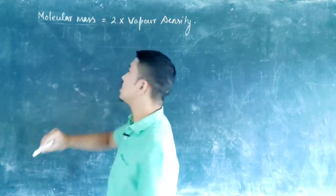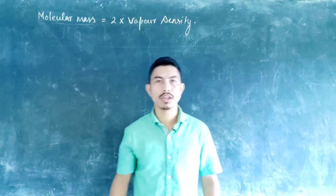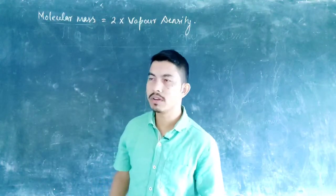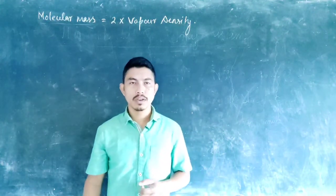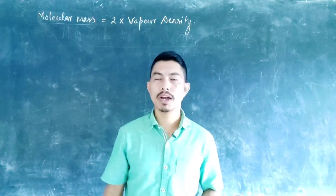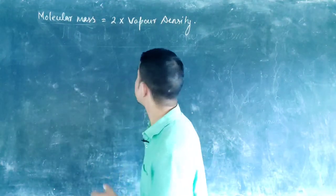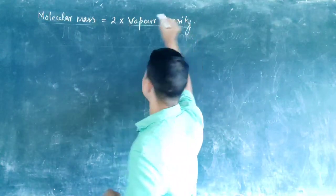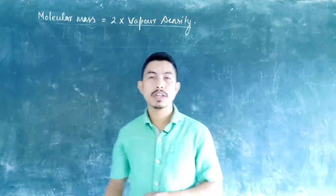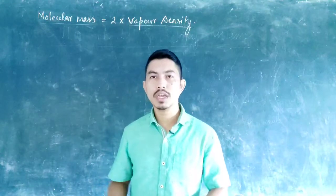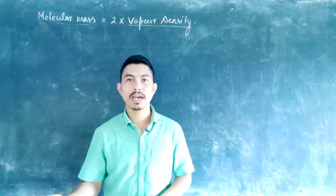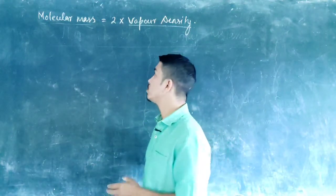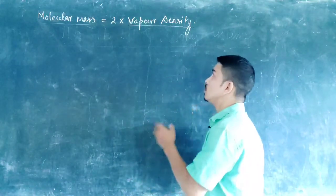The molecular mass is the number of times that the given molecule is heavier than one-twelfth part of the carbon-12 isotope. Coming to the term vapor density — vapor density is simply the ratio of equal volumes of the given gas to hydrogen gas. The relationship is: molecular mass equals two times the vapor density.